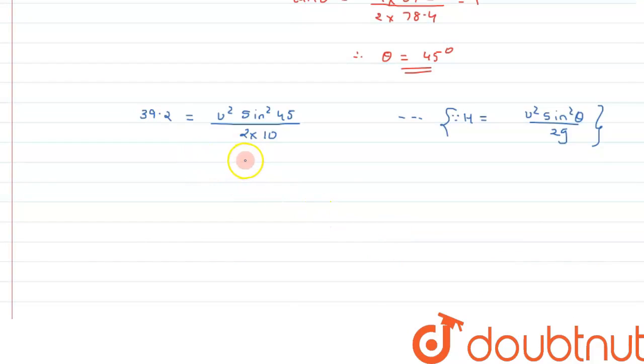So from here if we solve the value, we can say this can be written as 784 divided by... sine square 45 is 1 by 2, so therefore the value of u square will be nothing but it can be written as 816.